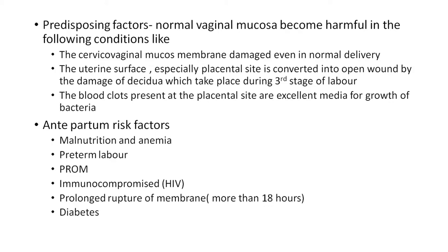Predisposing factors: Normal vaginal mucosa becomes vulnerable in the following conditions — cervical and vaginal mucous membrane damage can occur even in a normal delivery. The uterine surface, especially the placental site, is converted to an open wound by damage of decidua which takes place during the third stage of labor. Blood clots present at the placental site are an excellent medium for bacterial growth.